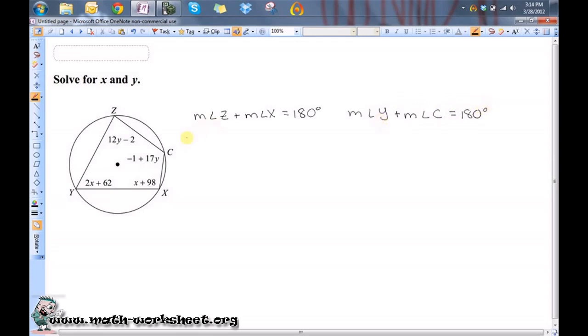So what I'm going to do now is substitute in the values for these various measures. The measure of angle Z is represented by the expression 12Y minus 2. The measure of angle X is represented by the expression X plus 98. I'm going to drop the degree symbol for simplicity's sake. So let me clean this up by combining like terms. We have 12Y plus X plus 96 equals 180.